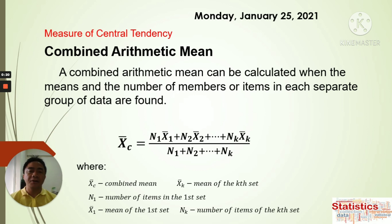We have here about the combined arithmetic mean. As we know, this is just the combination of all the arithmetic means. In the definition, a combined arithmetic mean can be calculated when the means and the number of members or items in each separate group of data are found.